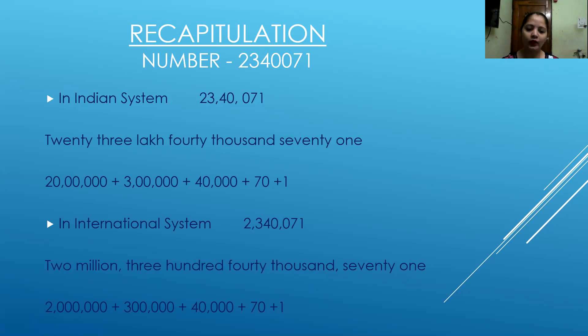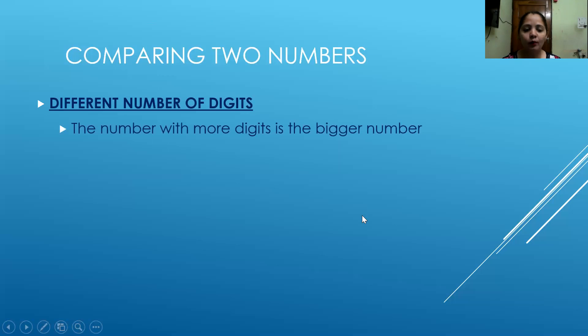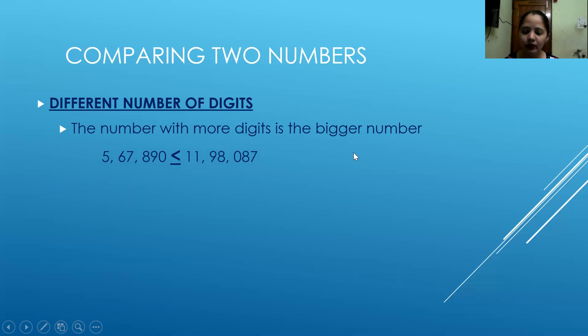I hope you remember what we did. So now let's move on to the new topic, which is understanding numbers — comparing two numbers. When we talk about comparing two numbers, there are two ways. One is when we have a different number of digits. If I am comparing two numbers and both numbers have different digits, then the number with more digits is the bigger number. Let's take the example here — the first number has six digits whereas the second number has seven digits, so the second number with more digits is the bigger number.